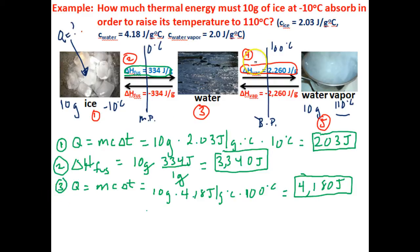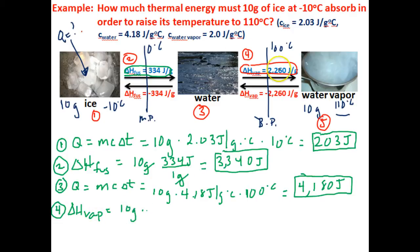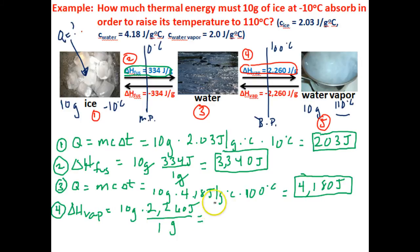In step four, we need to calculate how much thermal energy it's going to take to boil this 10 grams of water — the heat of vaporization. We've got 10 grams of water, and the heat of vaporization for water is 2,260 joules for every gram. That gives us 22,600 joules — this is the amount of thermal energy this water will need to absorb just to convert it into water vapor.